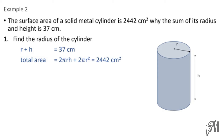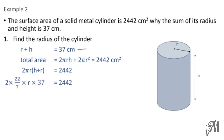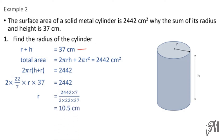In the surface area equation, 2πr is common to both terms, so we factor it out: 2πr(h + r) = 2442. We already know r + h = 37, so we substitute 37 in place of r + h and substitute 2π. Solving for r, we get r = 10.5 centimeters.